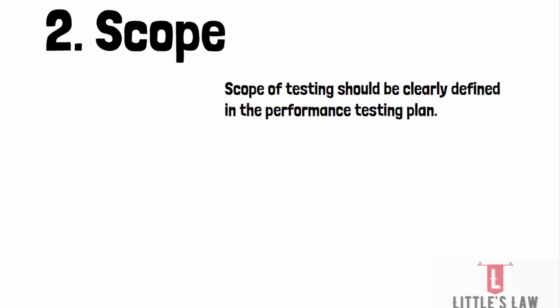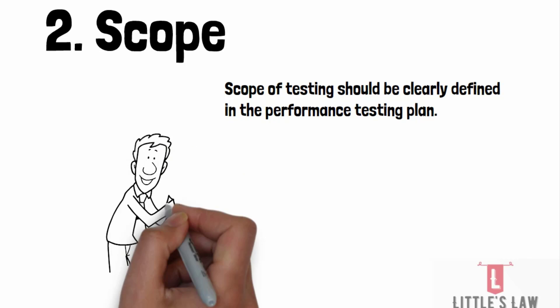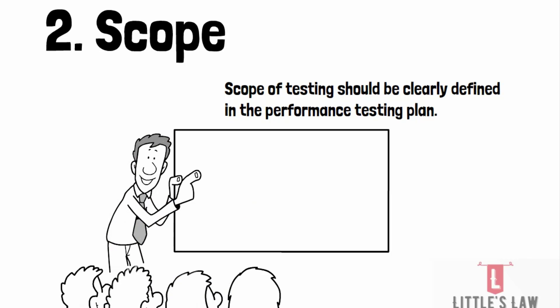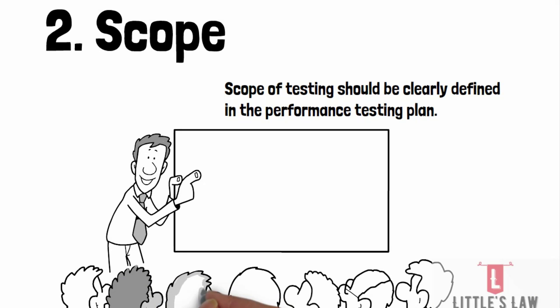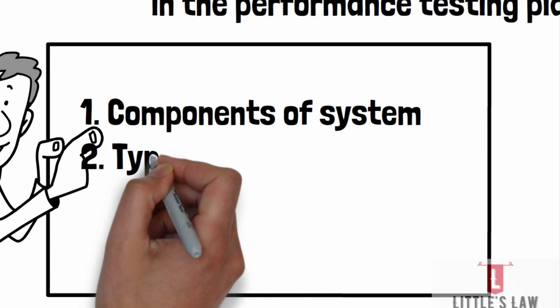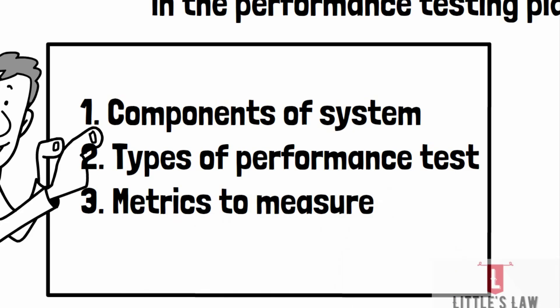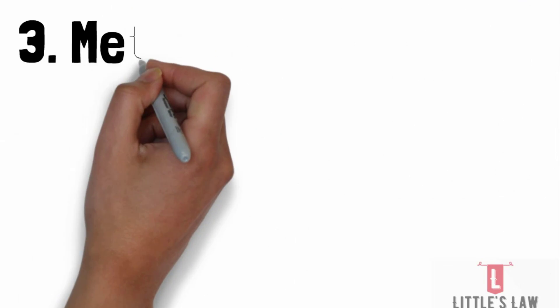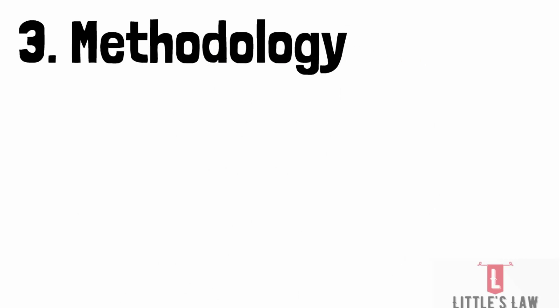When it comes to scope, it has to be clearly defined in the performance testing plan. This includes what components of the system have to be tested — such as the web server, application server, and database server — what type of performance test will be conducted, such as load testing, stress testing, or endurance testing, and what metrics will be measured, such as response times, throughput, or error rate.